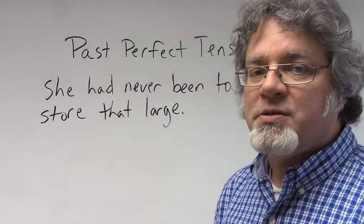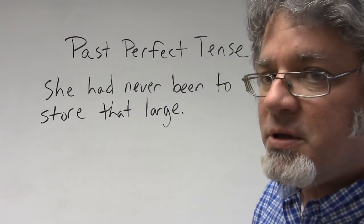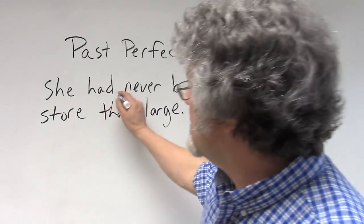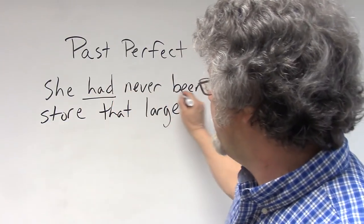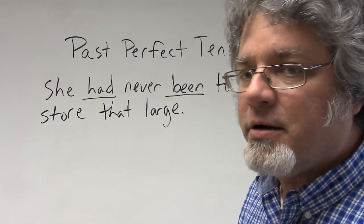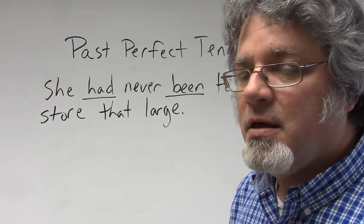In some sentences that use the past perfect tense, there's only one verb in the past perfect. For example, 'she had never been to a store that large.' So here's the past perfect, it's negative, and implied here is some action that did not take place in the past.